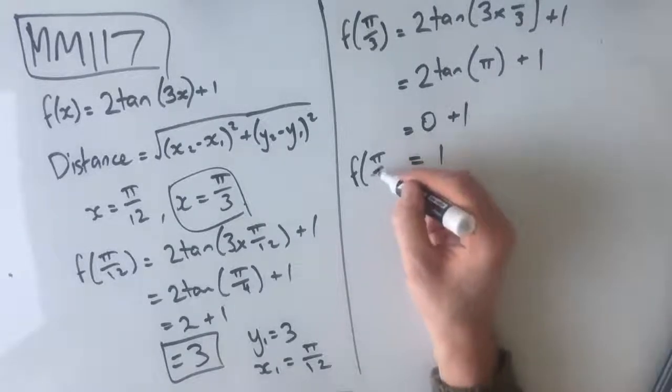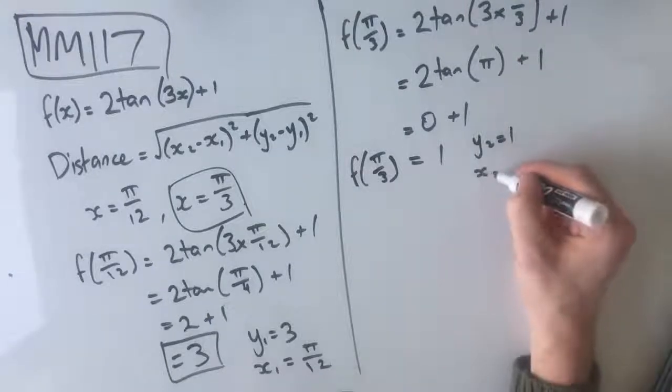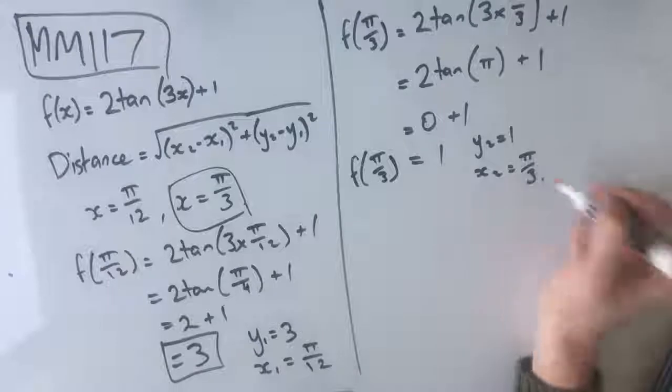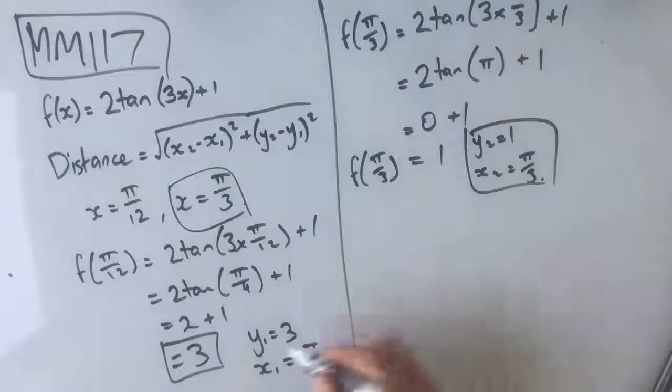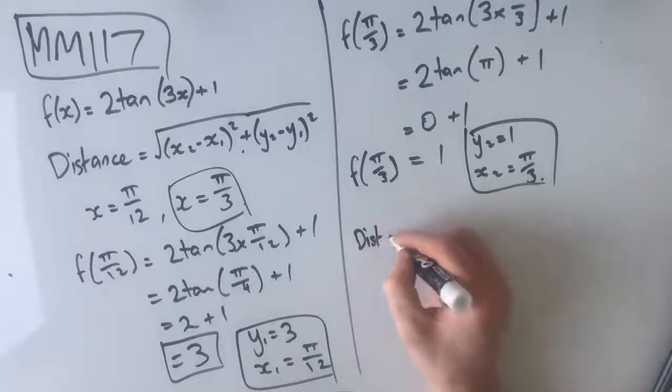So f of π/3 equals 1, which means that y2 equals 1, x2 equals π/3. So now we can plug this coordinate and this coordinate into our distance formula, which means that our distance is